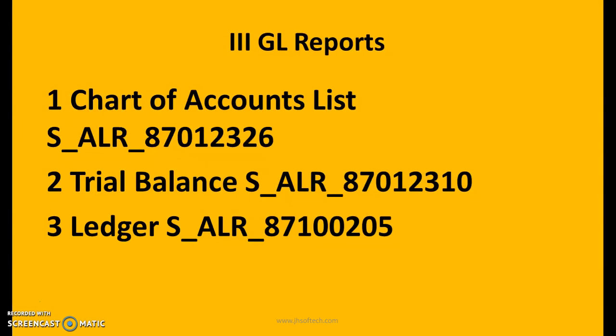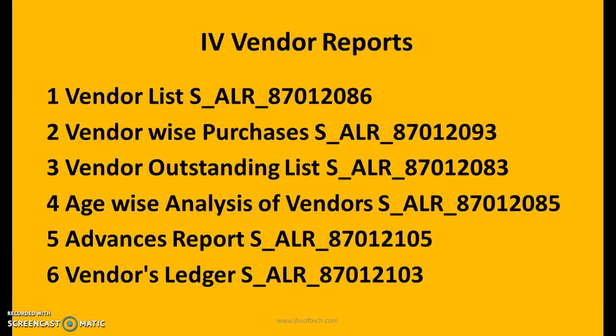GL reports — chart of accounts list: S_ALR_87012326. Trial balance: S_ALR_87012310. General ledger: S_ALR_87012310. Vendor reports: vendor list S_ALR_87012085. Vendor outstanding list: S_ALR_87012083. Analysis of vendors: S_ALR_87012085. Advances report: S_ALR_87012105. Vendors ledger: S_ALR_87012103.